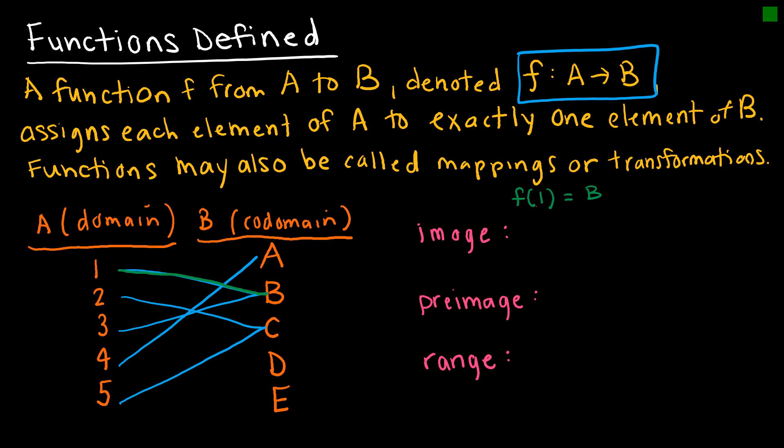So then I can say that B is the image of 1 under f, which would mean of course that 1 is the preimage of B under f. But be careful because notice, 3 also maps to B. So I would have to say 1 and 3, or the set of 1 and 3. More specifically, the set containing 1 and 3.